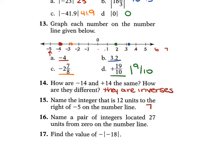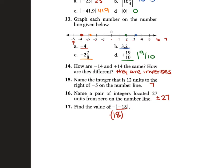Problem 16 says: name a pair of integers located 27 units from 0 on the number line. That's going to be positive 27 and negative 27. We could write 27, negative 27 or put a plus-or-minus sign in front of the 27 to represent both. For 17, we're finding the value of negative absolute value of negative 18. The absolute value of negative 18 is 18, and with the negative outside, it's just negative 18.